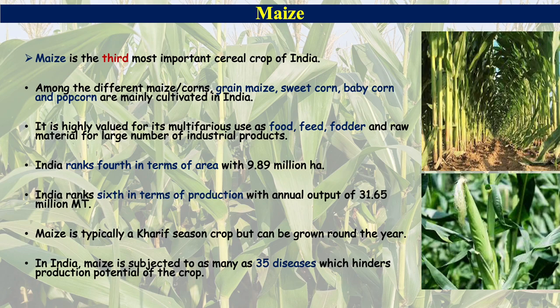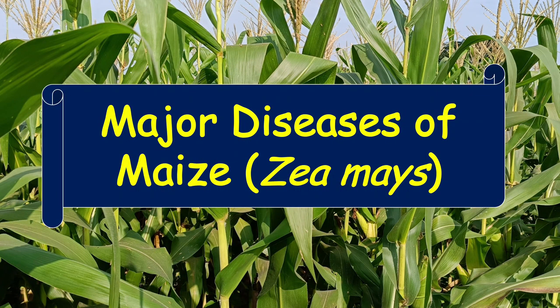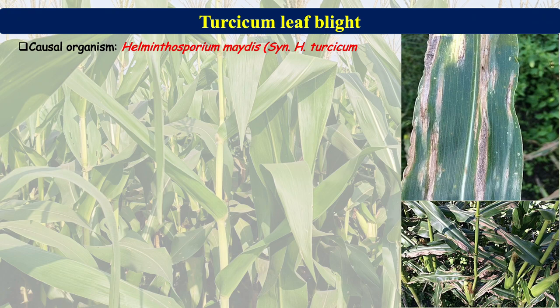India ranks fourth in terms of area with 9.89 million hectares, and sixth in terms of production with an annual output of 31.65 million metric tons. Maize is typically a Kharif season crop but can be grown around the year. The crop is subjected to as many as 35 different diseases which hinder its production potential. This video covers some of the major diseases of maize.